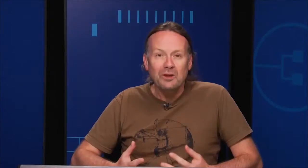Another thing that's related to this is that all of our Windows machines now have the capability of having offline maps. This is really cool — we've had this on Windows Phone for quite a while. We didn't until now have it on our Windows desktop and tablets, but now you can do this as well.